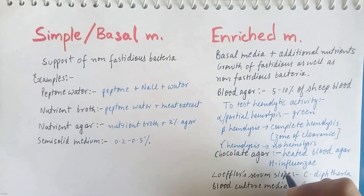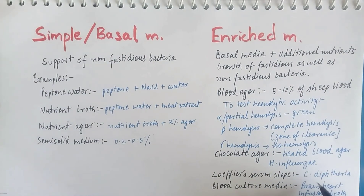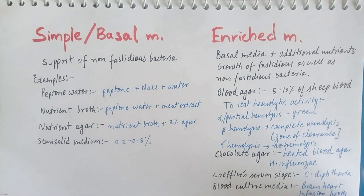In chocolate agar, heated blood agar is used in which hemin is released from the lysed RBCs. It is used for the culture of Haemophilus influenzae. Loffler serum slope is used for the isolation of Corynebacterium diphtheriae. Blood heart infusion broth is used in blood culture media.